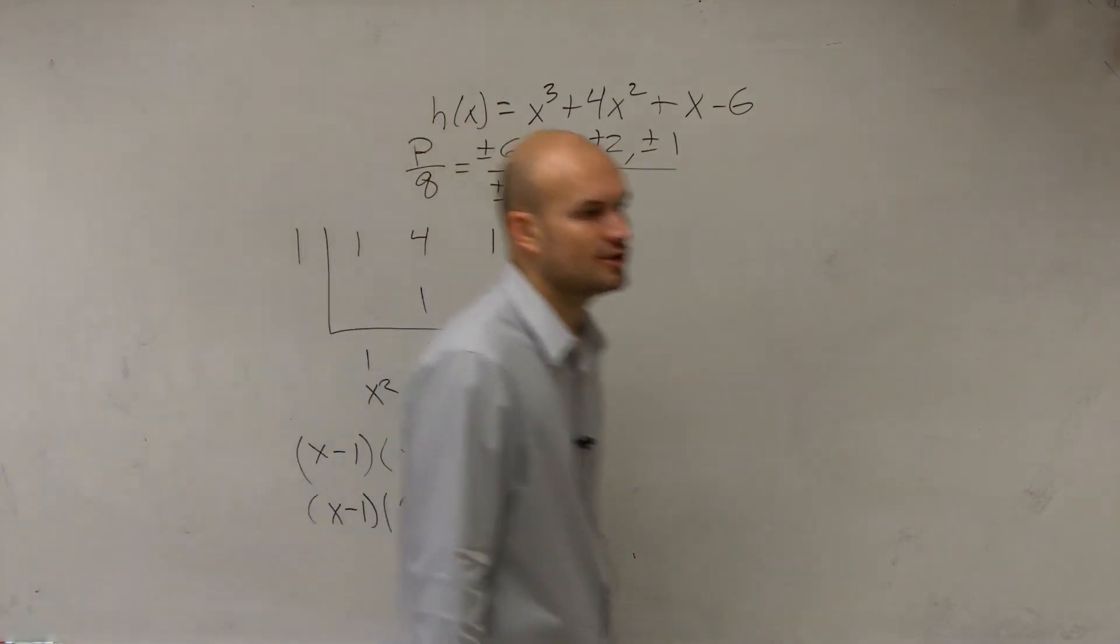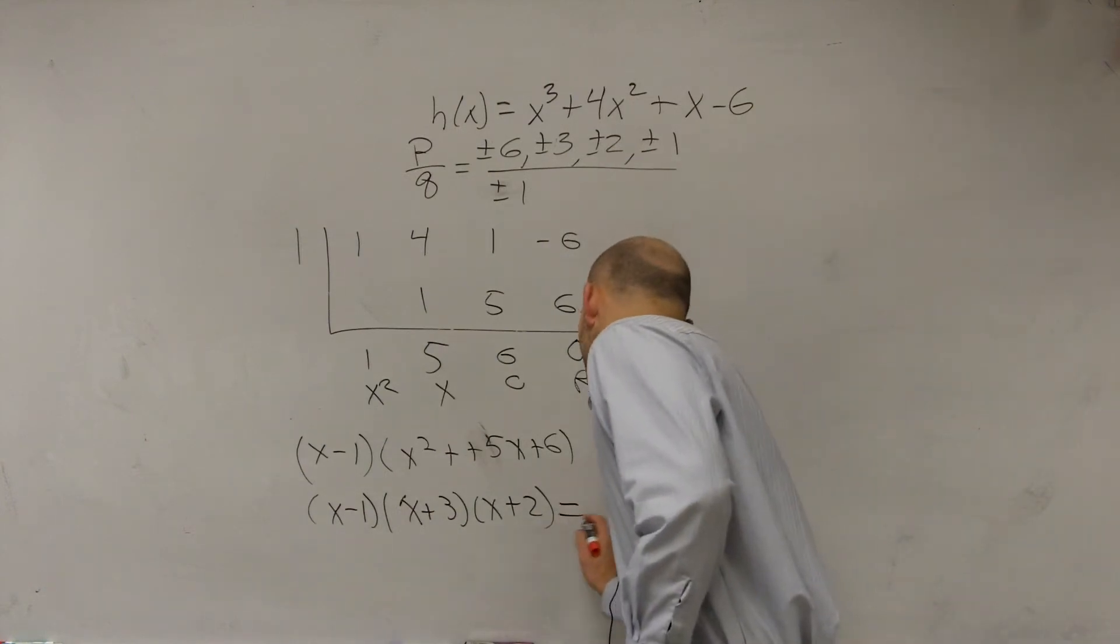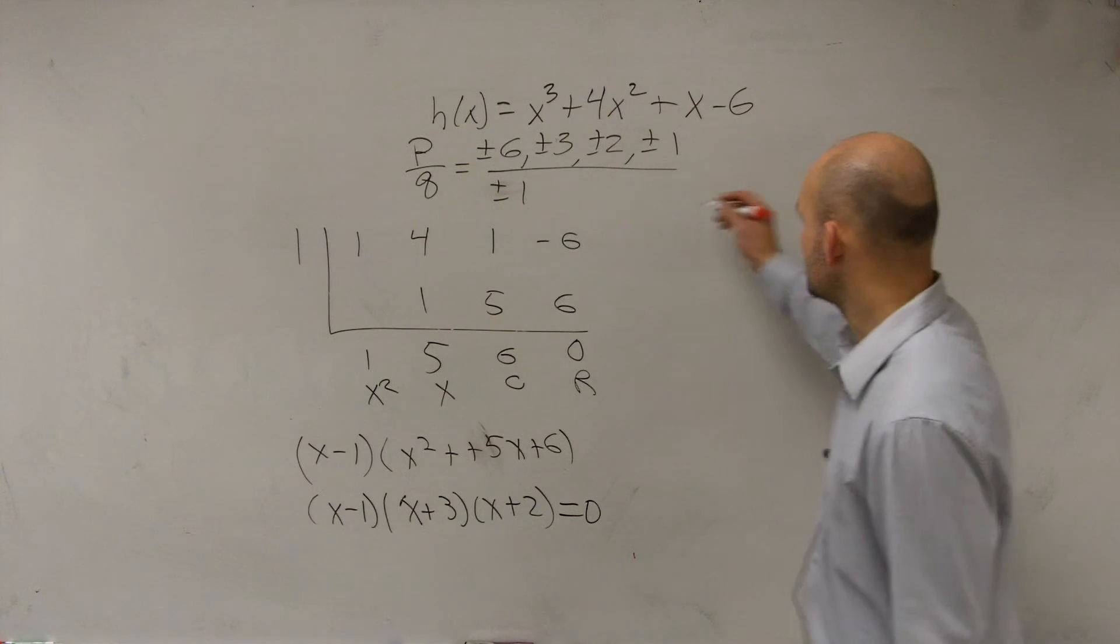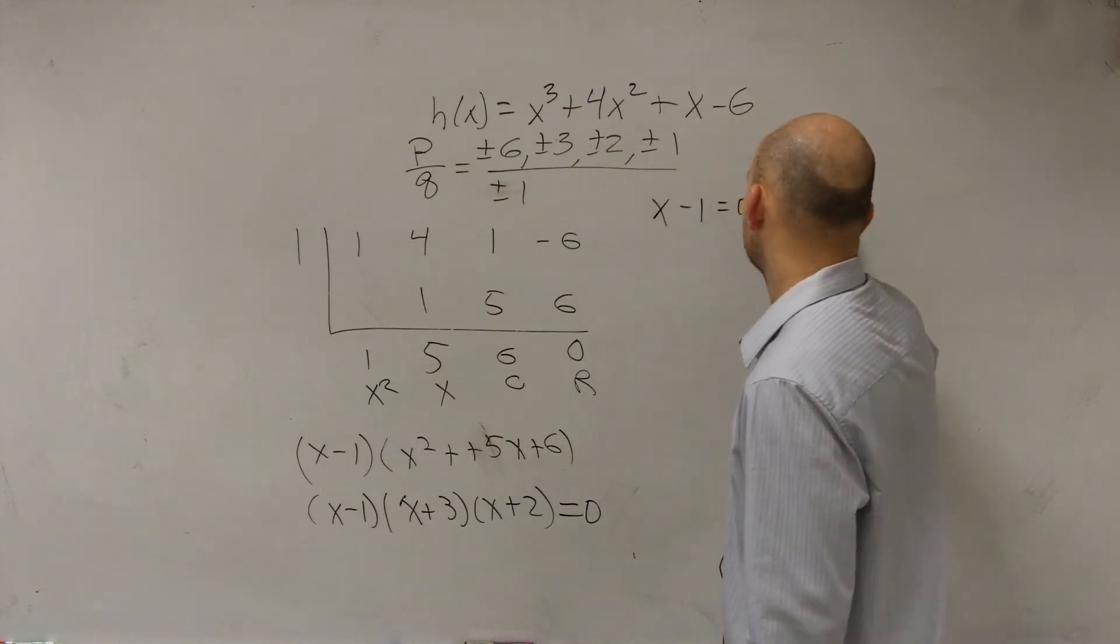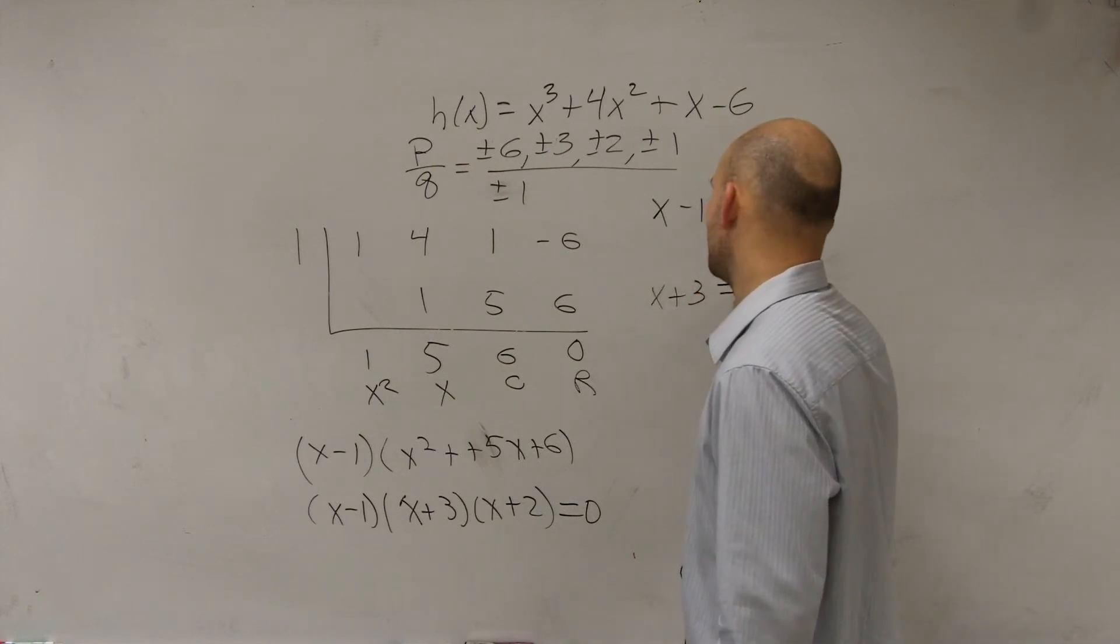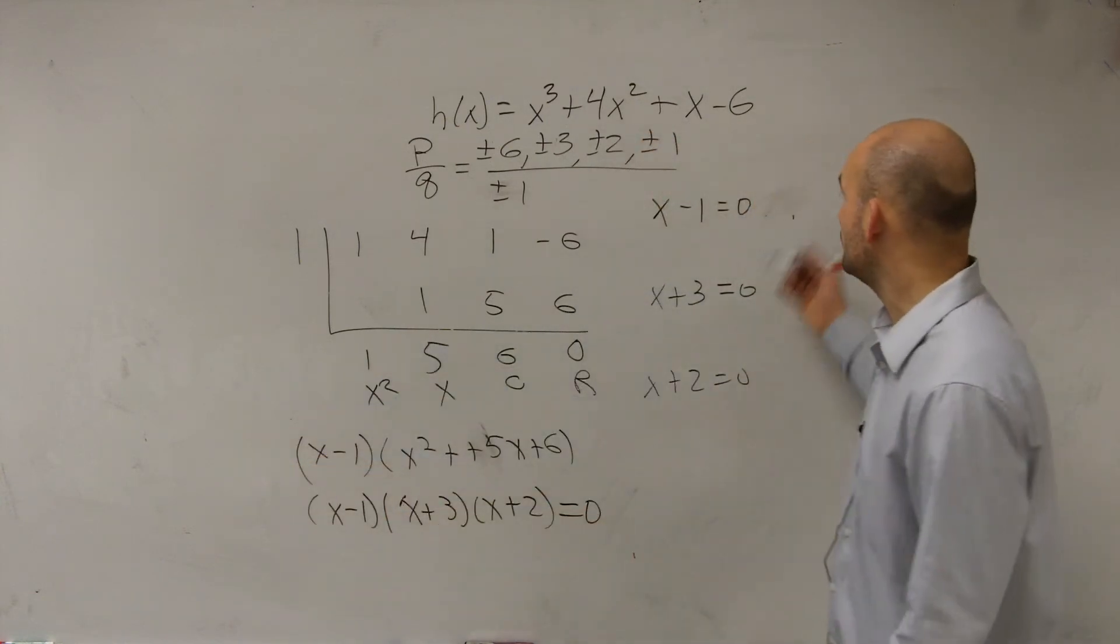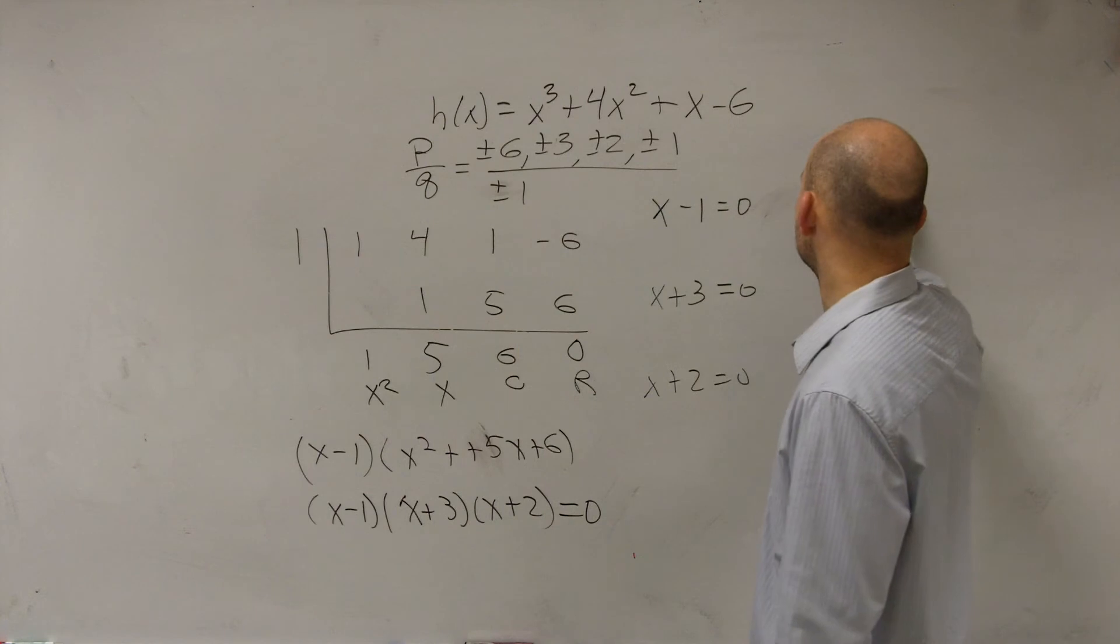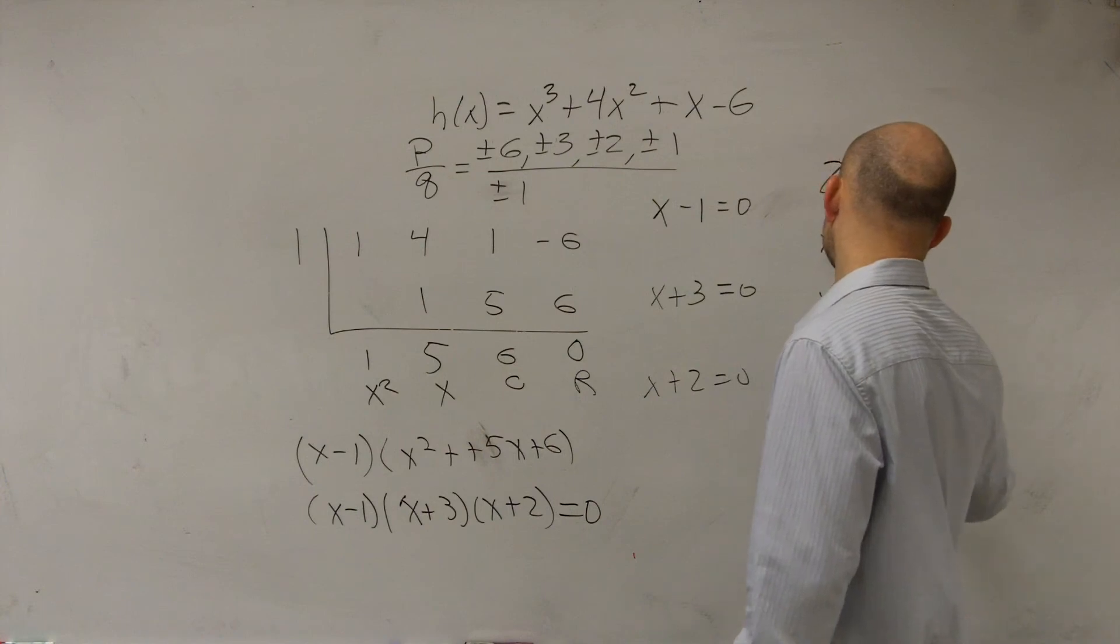So you guys can say that these are all your factors. So if I want to say what are the zeros, then I'm going to say that they're going to equal 0. So now you can say x minus 1 equals 0, x plus 3 equals 0, and x plus 2 equals 0. So you take all of your factors, set them equal to 0, and then you can now say my zeros are x equals 1, x equals negative 3, and x equals negative 2.